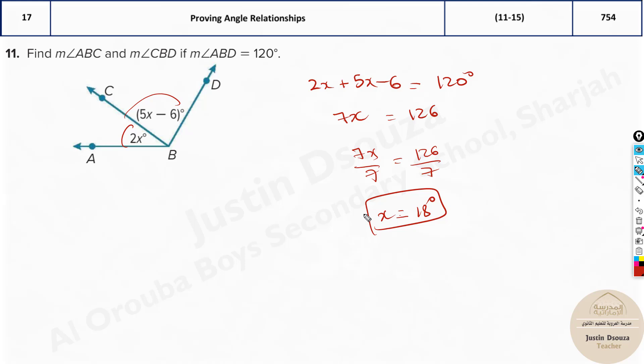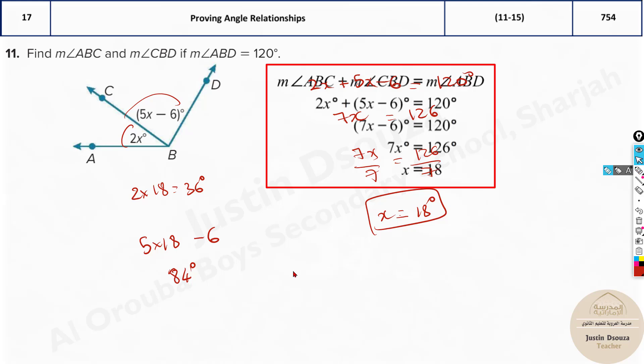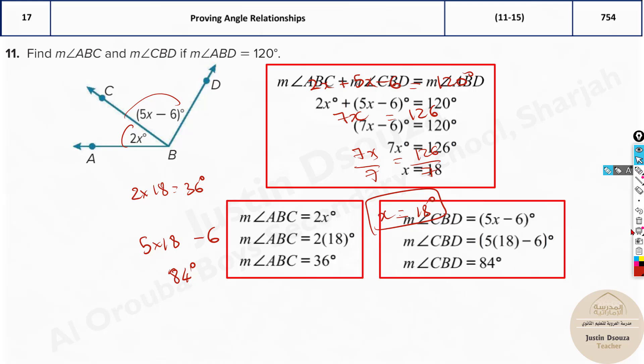So we found the x value. Now that we found the x value, can we find what is ABC? Yes, 2 times 18 is 36 degrees. What about this? 5 times 18 minus 6. So it'd be 90 minus 6, which would be 84 degrees. So these are the answers: 36 and 84 degrees.